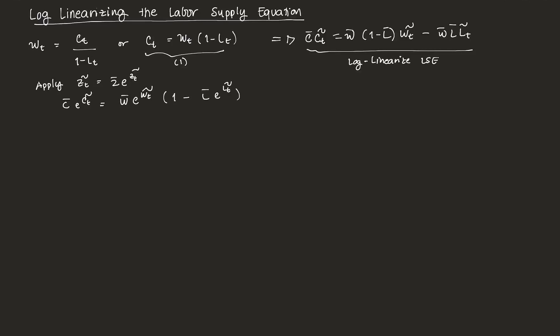Not so bad. Then simplifying it, we can distribute. We can distribute W E that form there. So we get C bar E Ct tilde is equal to W bar E Wt tilde minus W bar L bar E.